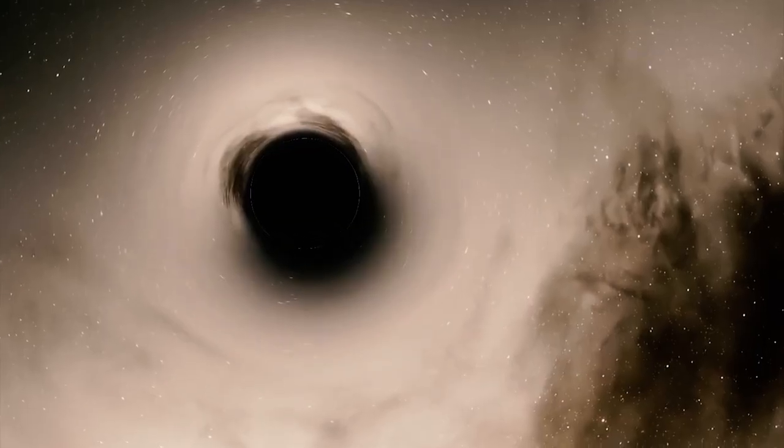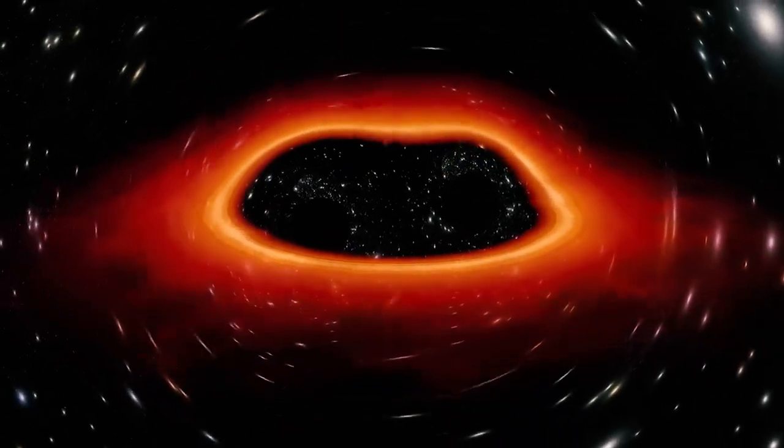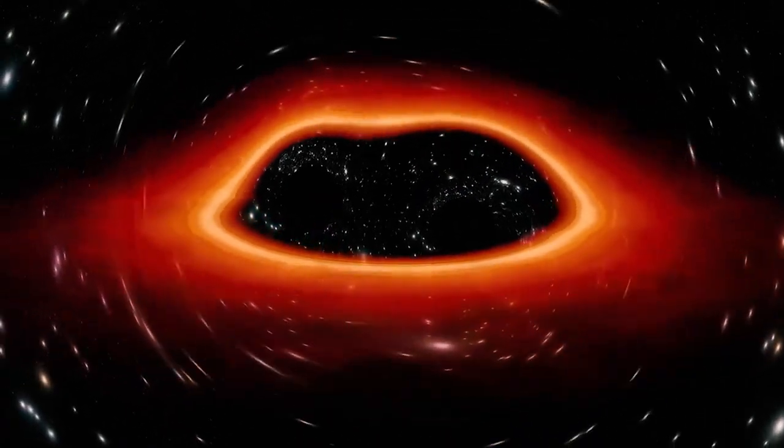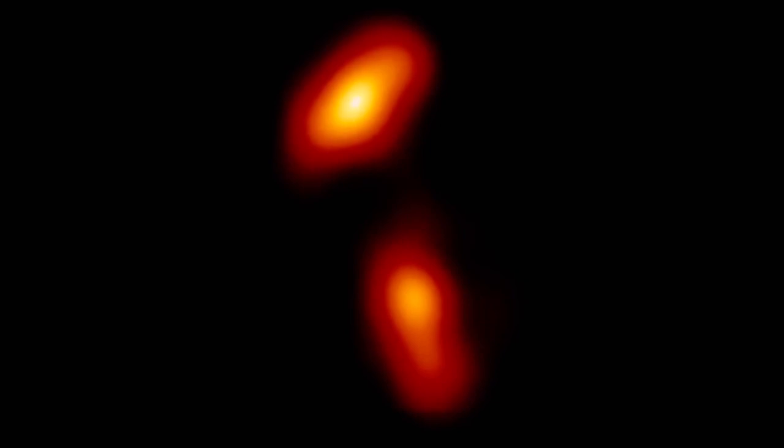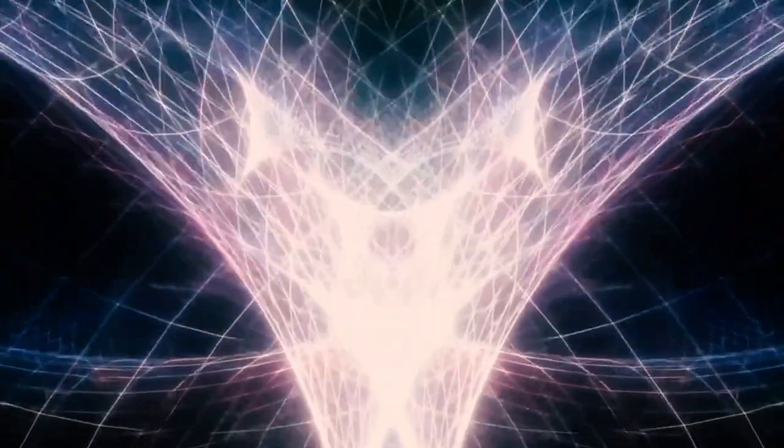The first known mention of black holes happened in November 1783, when John Michel, the natural philosopher and clergyman, used the term dark star in a letter to Henry Cavendish. However, it wasn't until the early 20th century that astrophysicists used the term gravitational collapsed object.